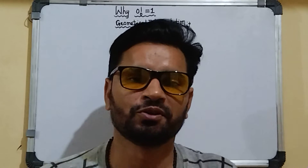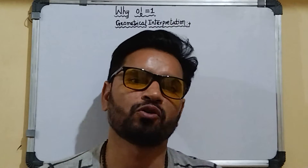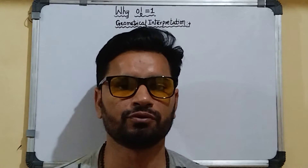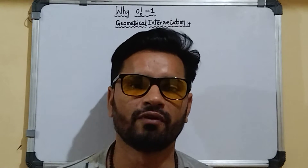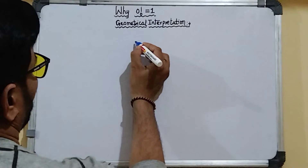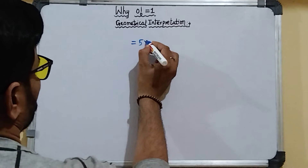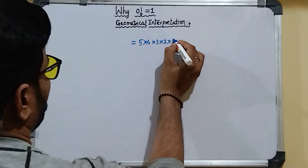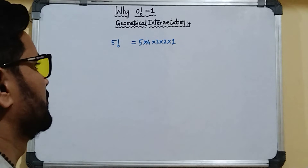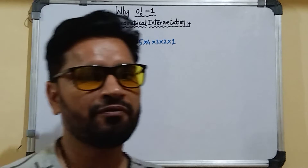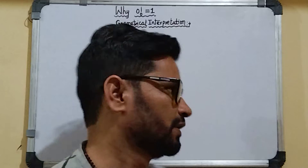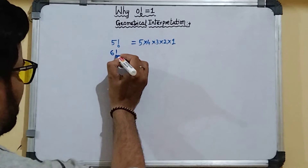Hello viewers, good day. Today we are going to discuss an important topic: how we can prove that factorial 0 is equal to 1. First, let's understand what factorial notation is. Suppose we multiply 5 × 4 × 3 × 2 × 1 — these numbers can be written as 5! (factorial 5). That means if you multiply from 5 down to 1, we can write factorial 5.